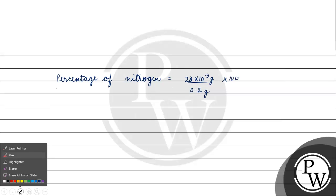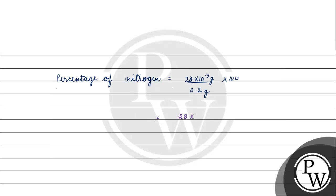How much will it be? This will come out to be 28 × 10⁻¹ by 0.2, which is 2.8 by 0.2. How much will it be? 14%. Percentage of nitrogen will be equals to 14%.